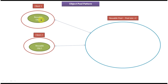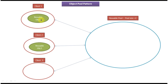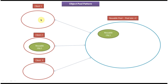Now after some point of time client 3 comes and requires a reusable object from the reusable pool. The reusable pool checks the pool — no reusable object is available. It checks the pool size, which is 2, but already two objects are created and returned to client 1 and client 2, so it cannot create a new object. The reusable pool waits until client 1 or client 2 releases a reusable object. After some time, client 1 finishes the job and returns reusable object 1 to the reusable pool, which then returns it to client 3.